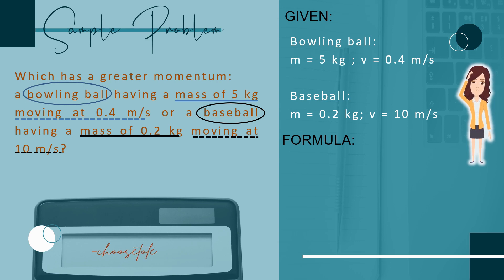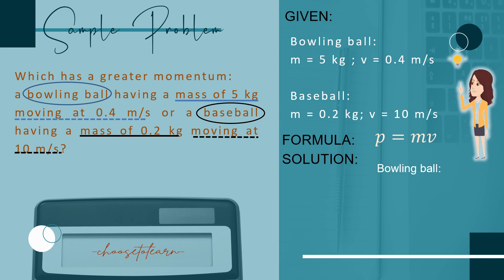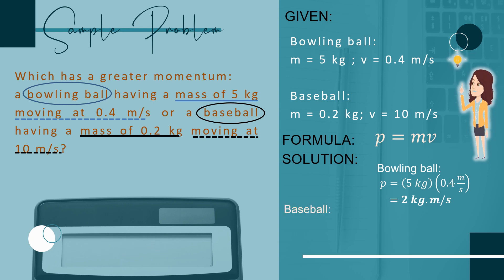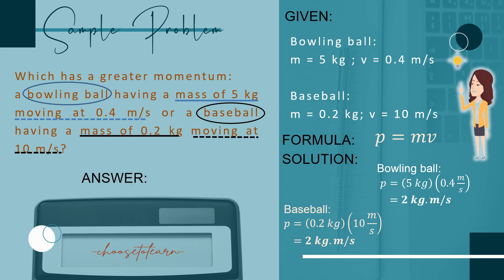The formula we are going to use is P equals M times V. For the bowling ball: P equals 5 kilograms multiplied by 0.4 meters per second, which gives 2 kilograms meters per second. For the baseball: P equals 0.2 kilograms multiplied by 10 meters per second, which also gives 2 kilograms meters per second. Therefore, both balls have the same momentum.